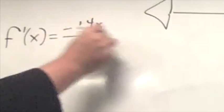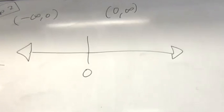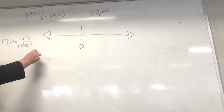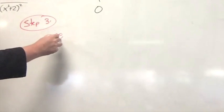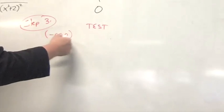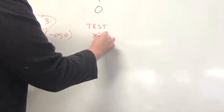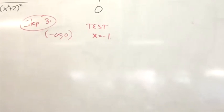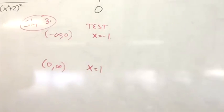So my f prime of x was e to the 14x over x squared plus two squared, right? I need one test point from each interval, so this is step three. I'm going to pick the test points. From negative infinity to zero, what would you like for me to test that is between negative infinity and zero? X equals negative one. What about zero to infinity? Test x equals one.